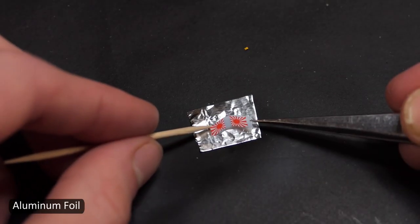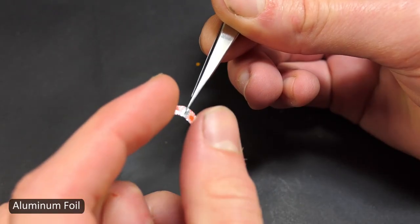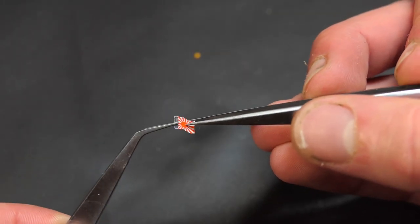To finish this off, I applied the decal to some aluminum foil, that way you can bend it around and make it look wavy, like it's flowing in the wind.